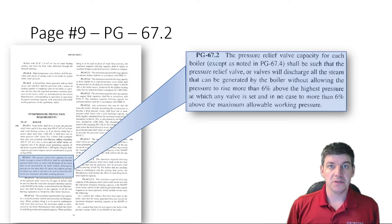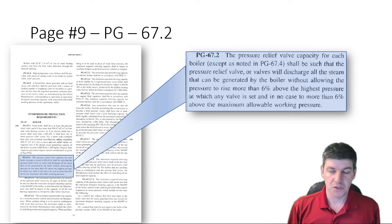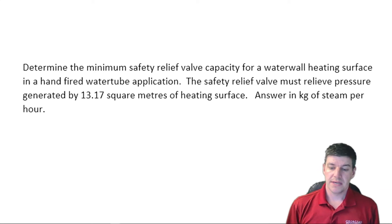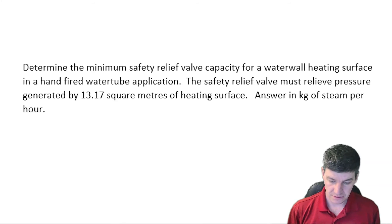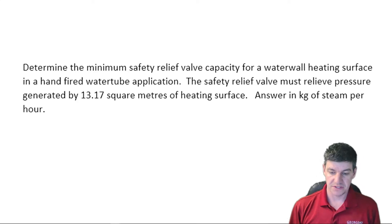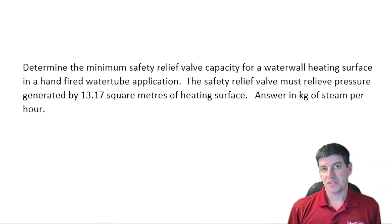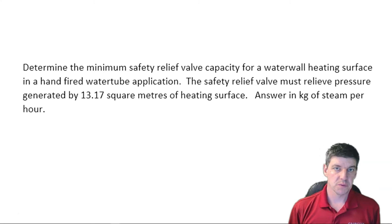In this section, typically you might get a calculation-based question. We have a sample question: determine the minimum safety relief valve capacity for a water wall heating surface in a hand-fired water tube application. The safety relief valve must relieve pressure generated by 13.17 square meters of heating surface, answered in kilograms of steam per hour. Neither of those two clauses from PG-67 are really going to be helpful for this question.